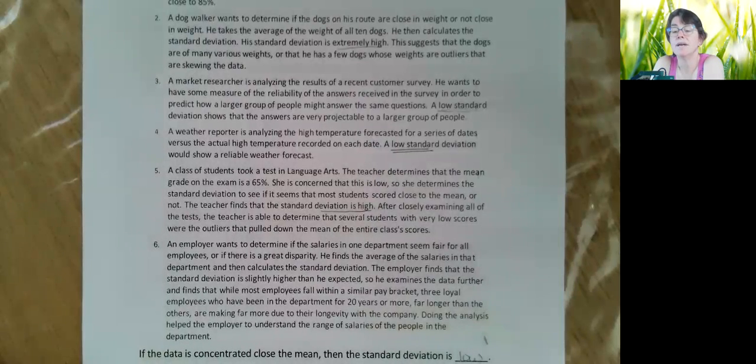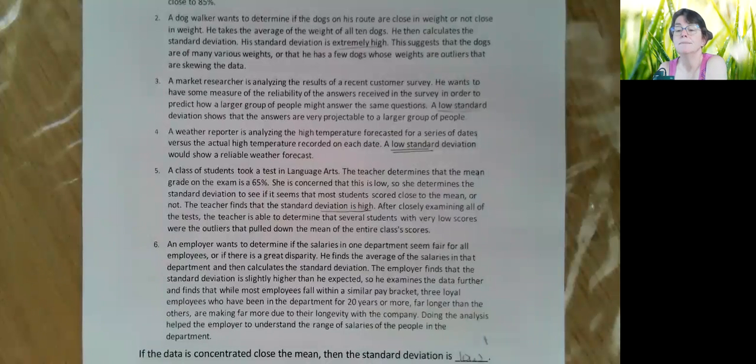So you might have a year where the average is, I don't know, it's like 50%, and you might have another year where the average is, I don't know, 85% because it was a super easy exam. Well, class averages are supposed to be 65%. I'm not sure who decided that, but somewhere along the way, that should be what a class average is.